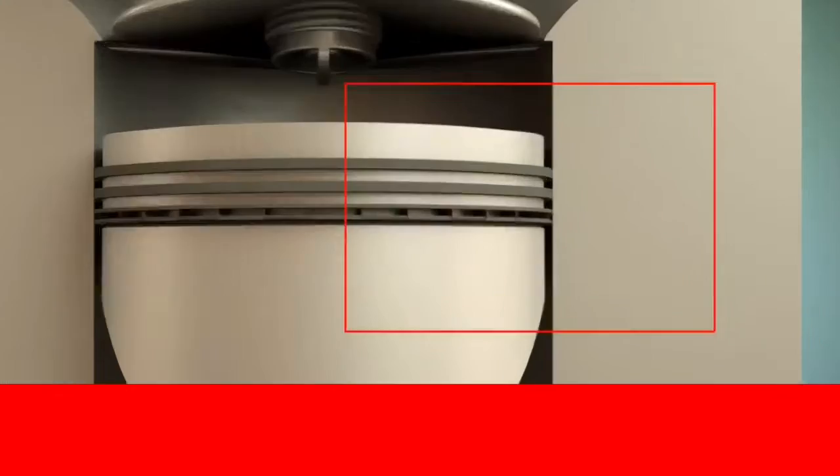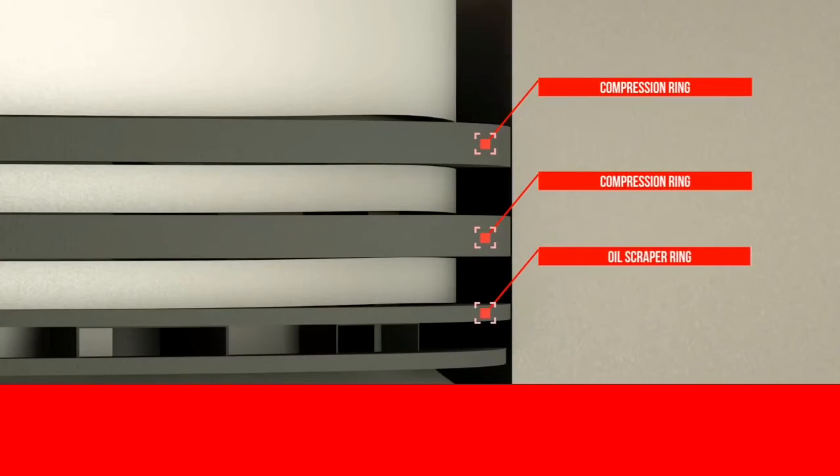The piston has one or two compression rings and one oil scraper ring. The oil scraper ring is responsible for controlling the oil balance at the piston and the compression rings. Excess oil flows inwards through holes, especially when the piston is running down. Then, the oil can drain down from the piston into the oil sump.